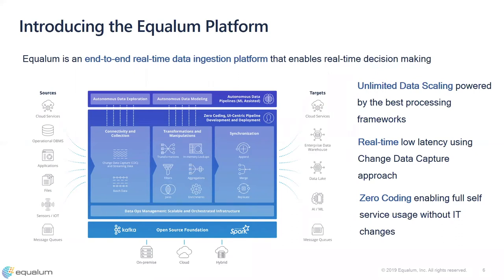This is an overview of the Equalum platform. As you'd expect, the platform sits in the middle between your sources on the left and your targets on the right. We'll focus today on Oracle to Postgres, but Equalum supports many different data sources and targets — cloud services, different RDBMS, NoSQL databases, applications like SAP and Salesforce, files on S3 or HDFS or local file systems, message queues, and more. On the other side, targets include cloud services, database data lakes, and so on.